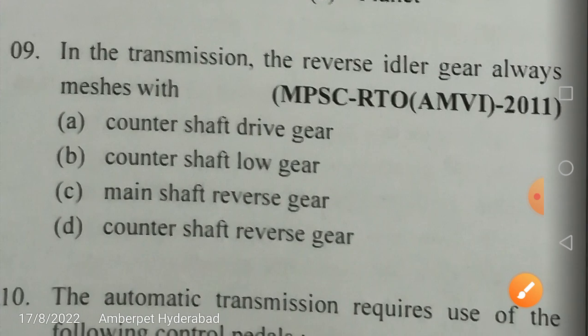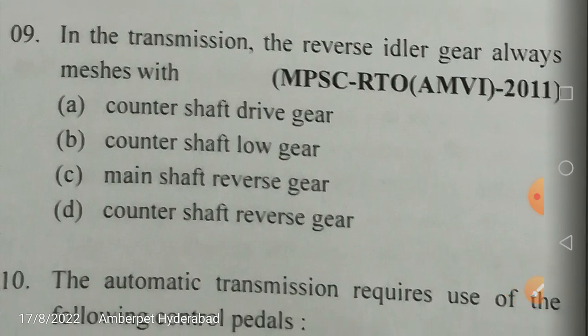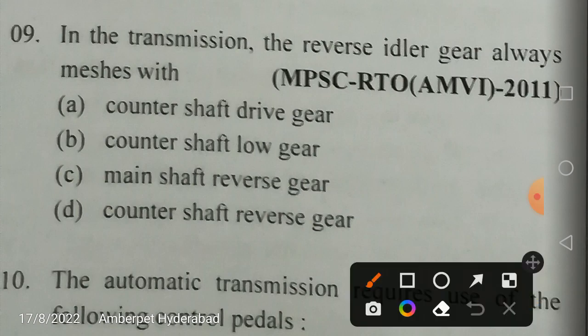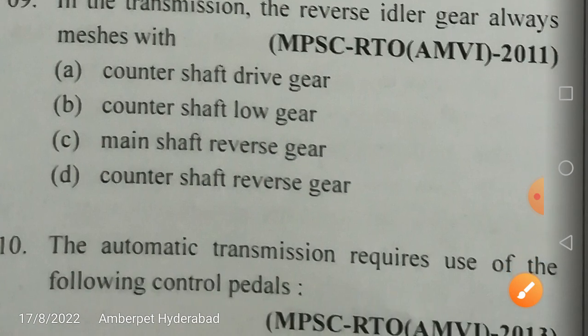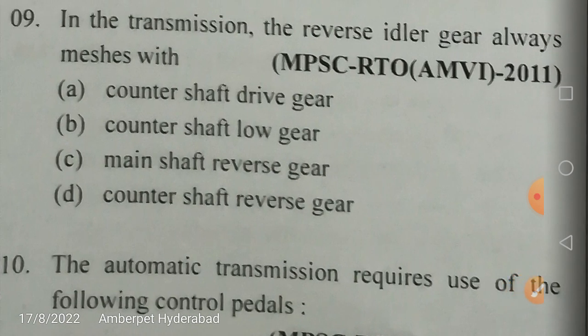In the transmission, the reverse idler gear always meshes with the counter shaft reverse gear. The purpose of the idler gear is to reverse the direction of rotation of the gears, enabling the vehicle to move in reverse. The idler does not change speed — it only changes direction. So the answer is counter shaft reverse gear.